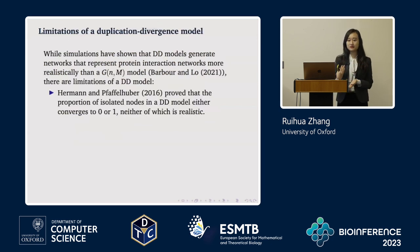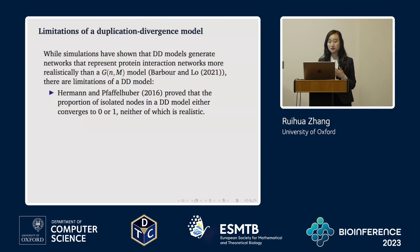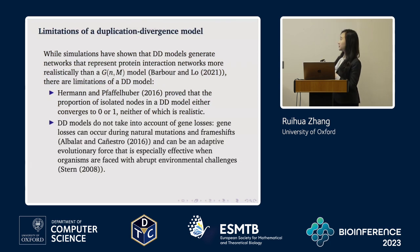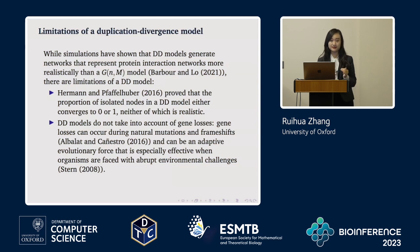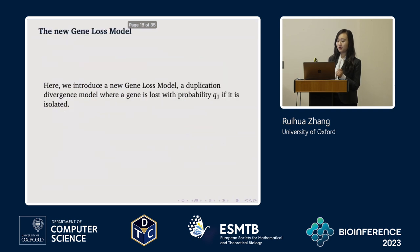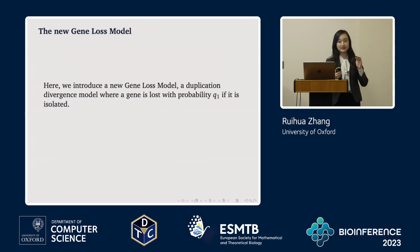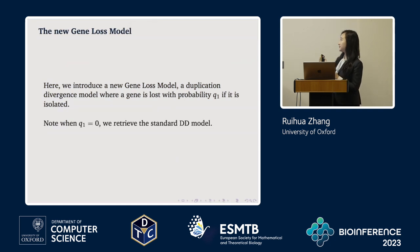Although the standard duplication divergence model has been shown to be more realistic than a G&M model, papers have suggested that the proportion of isolated nodes in a DD model converges to either one or zero — neither of which is realistic. It also doesn't account for gene loss, which can occur during natural mutations and frameshift events and can be an adaptive evolutionary force. Our group therefore introduced a gene loss model where a gene is lost with probability Q1 if it is isolated in the network. Setting Q1 to zero retrieves the standard DD model.